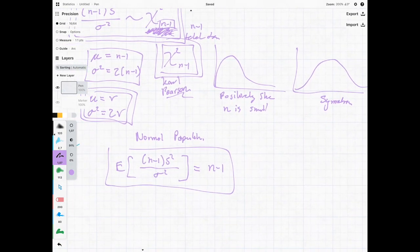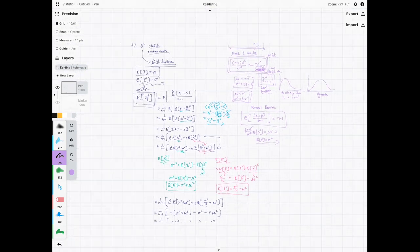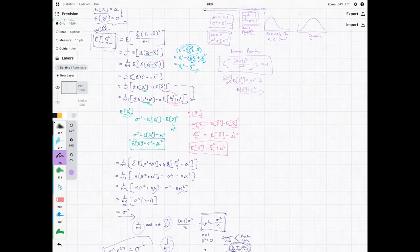And I mean if we had to work this out what we would see is that n minus one divided by sigma-squared expected value of s-squared is equal to n minus one. Where we can now divide this on both sides and we're going to get one, divide this on both sides and we see expected value of sigma-squared is equal to sigma-squared.